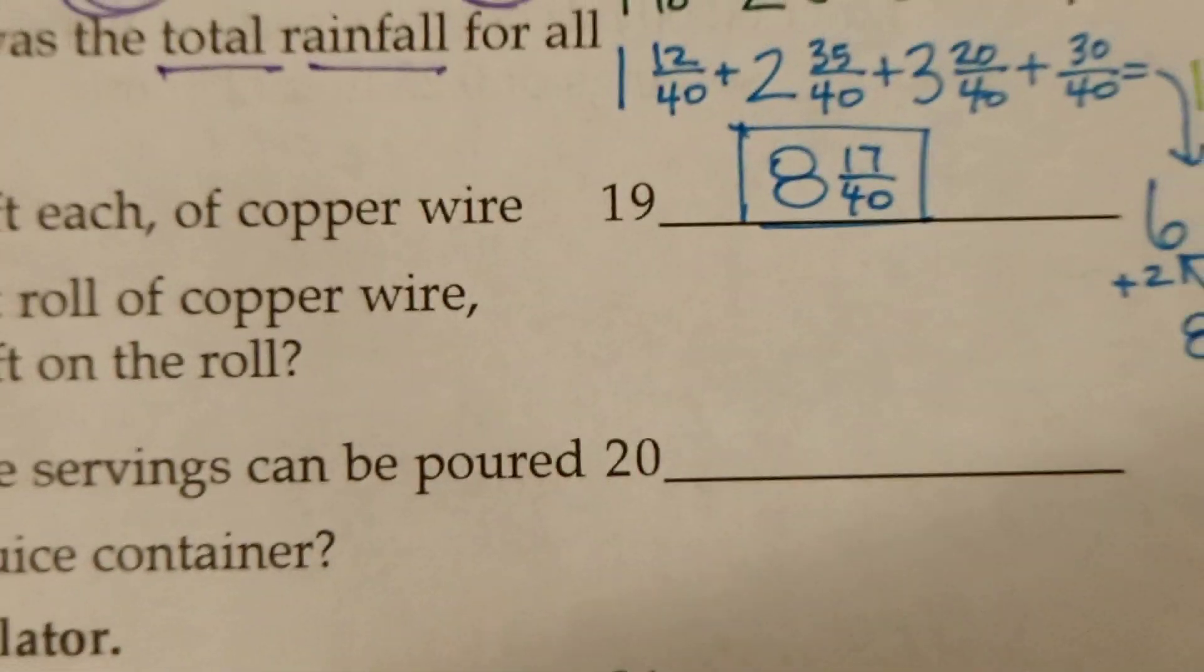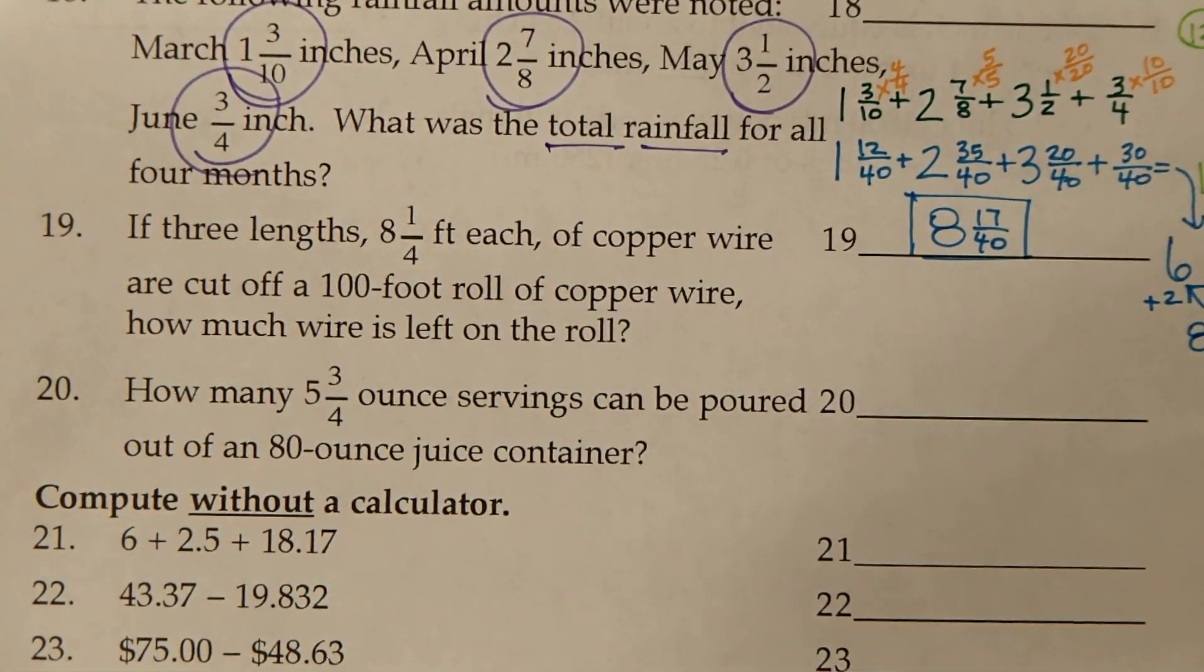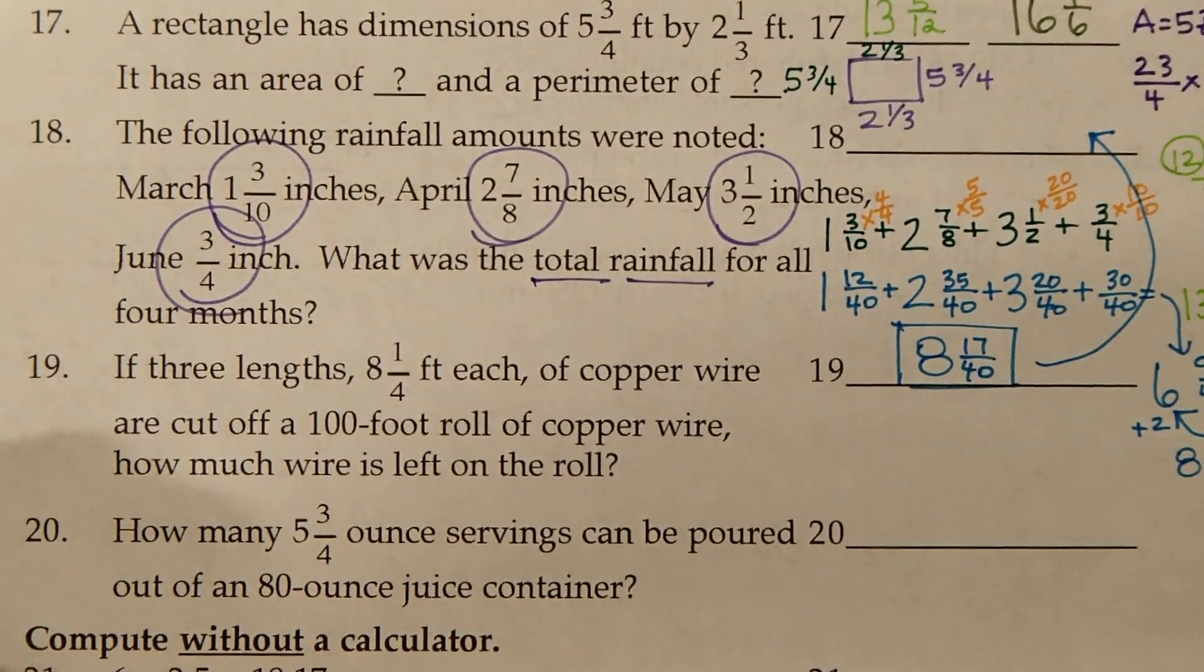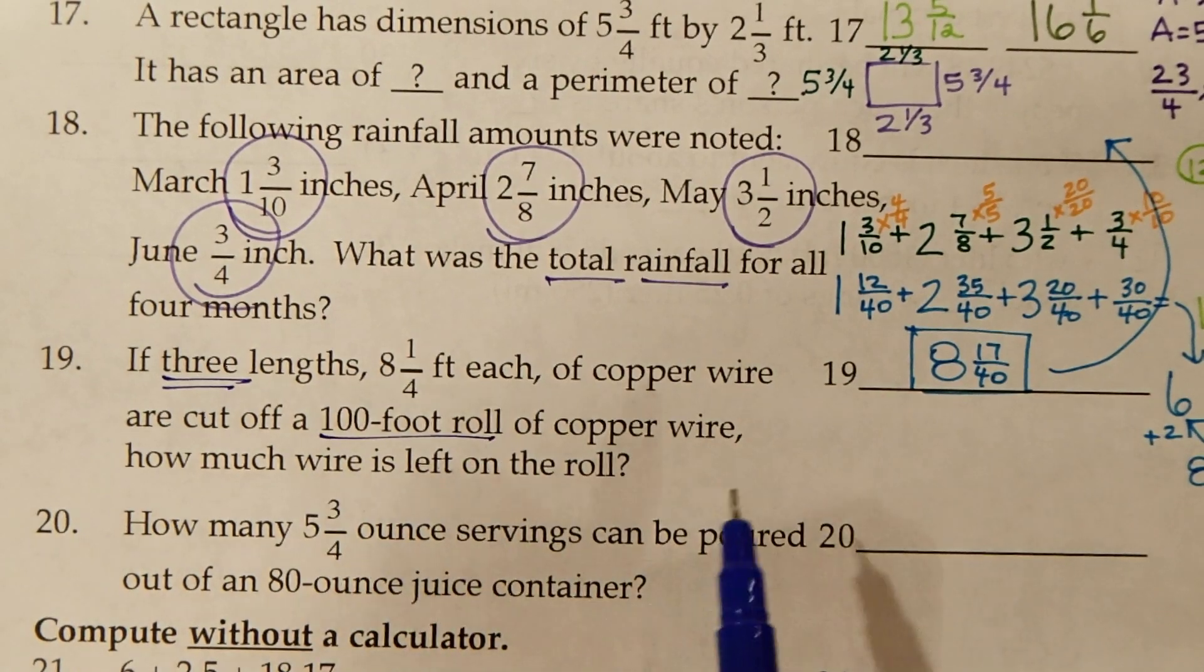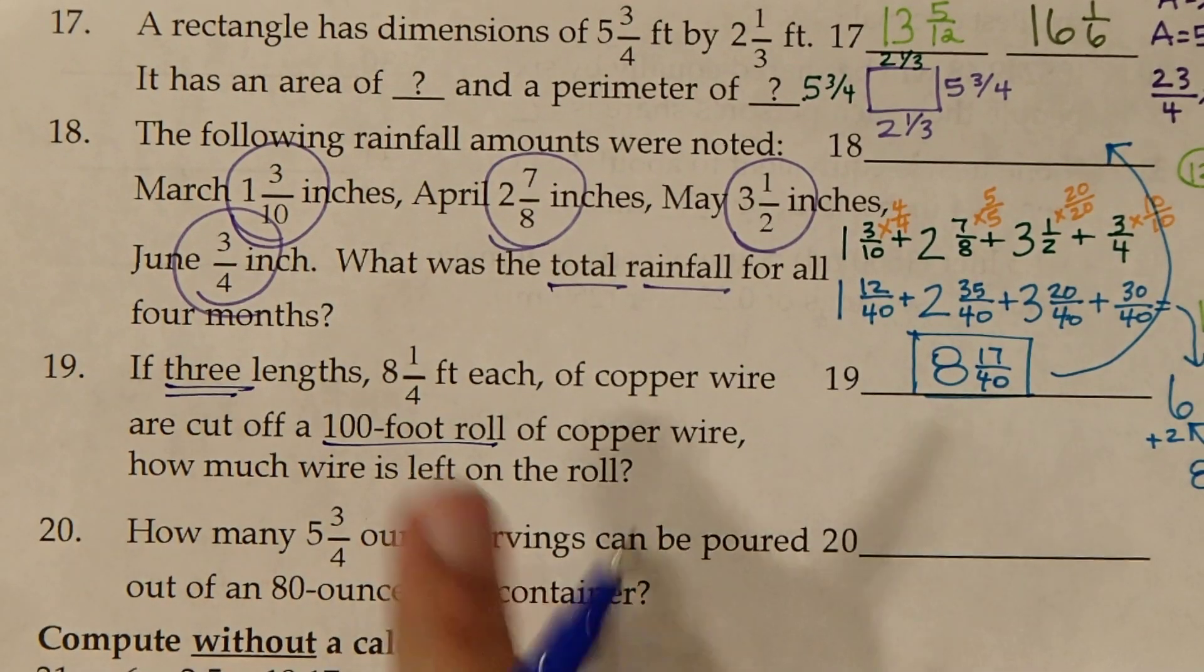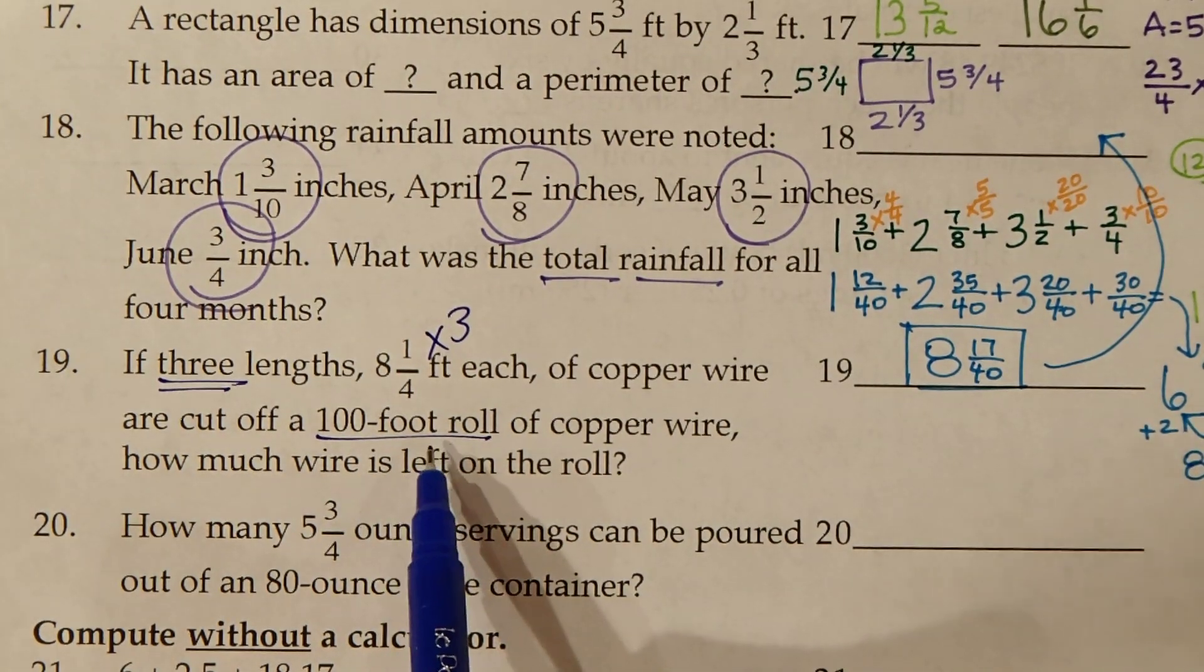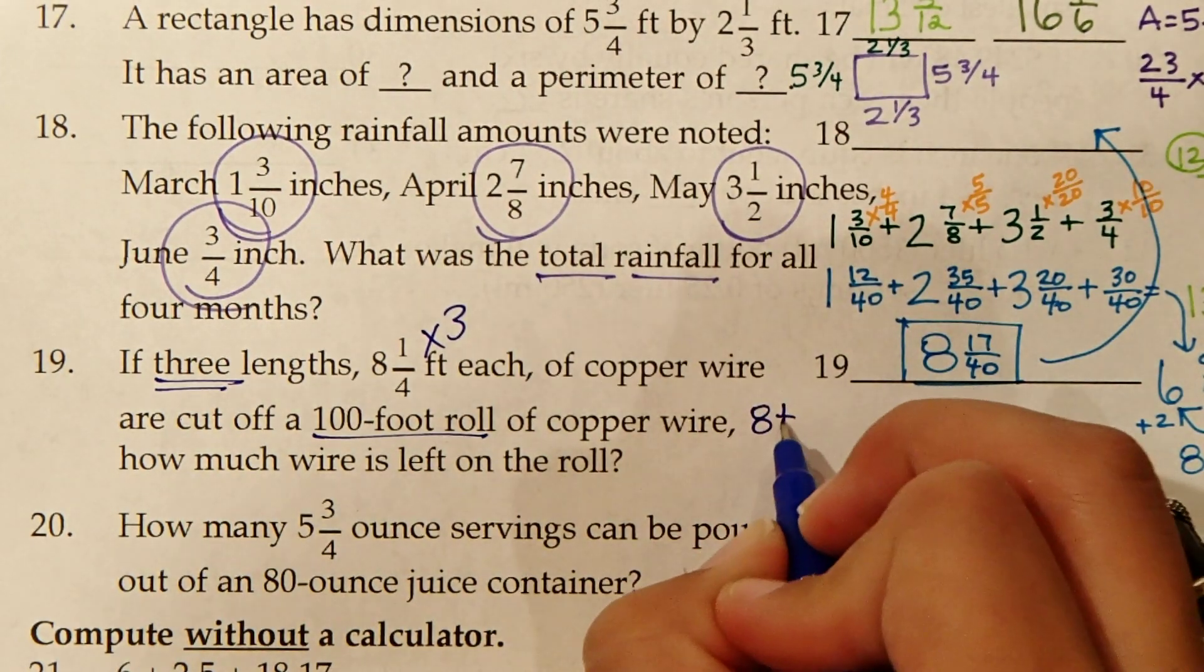Now let's look at number 19. If 3 lengths, 8 and 1 4th foot each, of copper wire are cut off a 100 foot roll of copper wire, how much wire is left on the roll? We are taking 3 chunks of 8 and 1 4th out of this 100 foot roll. I'm going to multiply this times 3 because there's 3 lengths. Then we're going to subtract it from the 100 foot roll to see how much wire is left.